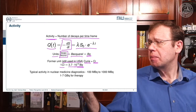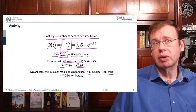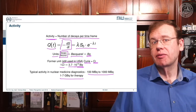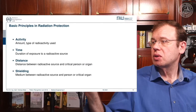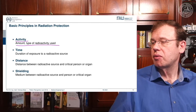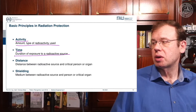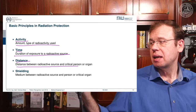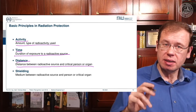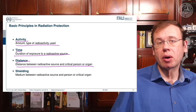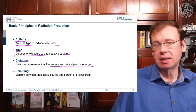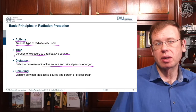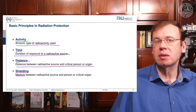Typical activity in nuclear medicine is 100 to 1000 Megabecquerel, and in therapy 1 to 7 Gigabecquerel. What's relevant is activity — the amount and type of radioactivity used — along with the time of exposure, and distance, which is important because of the inverse-square distance law: the farther apart from the source, the less interaction with tissues. There is also shielding: introducing a medium between the radioactive source and the person to prevent radiation reaching unwanted locations.